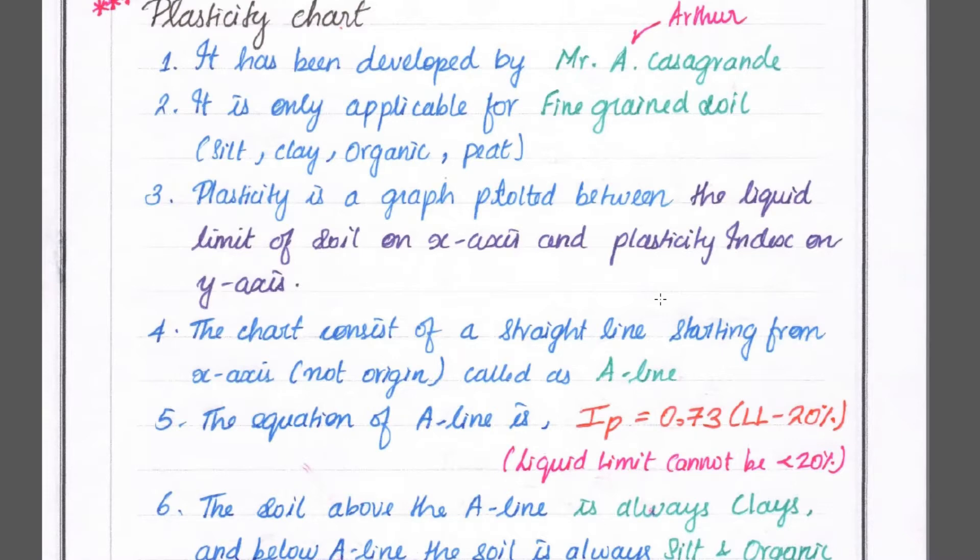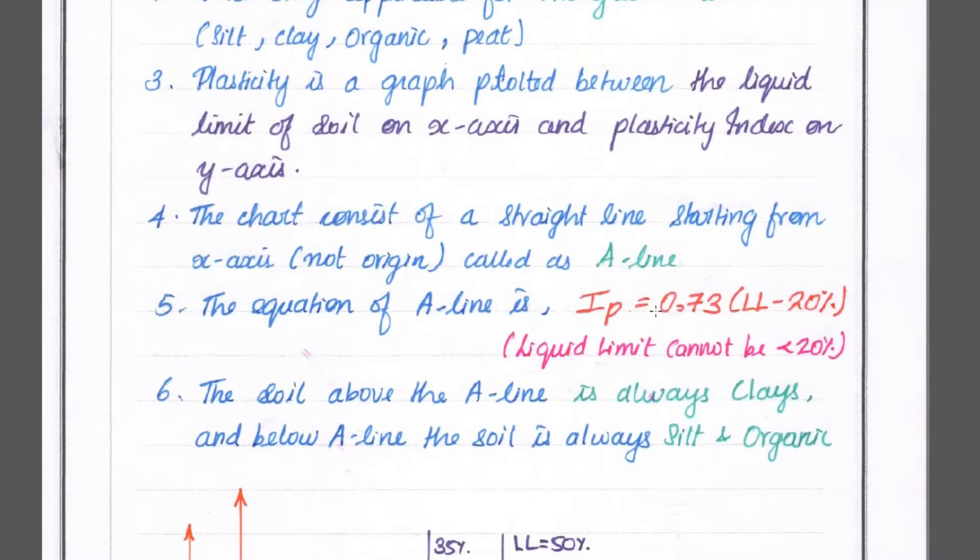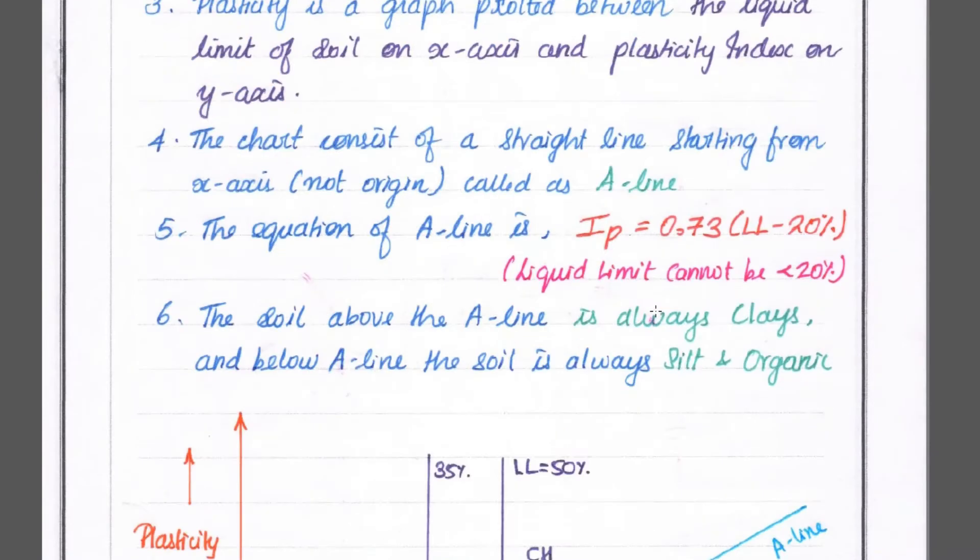Plasticity graph is plotted between the liquid limit on x-axis and plasticity index on y-axis. This chart consists of a straight line that is not starting from the origin. There is a line called A-line.